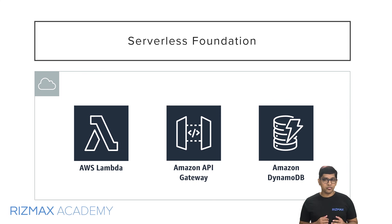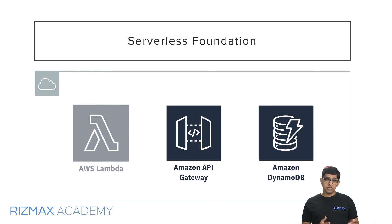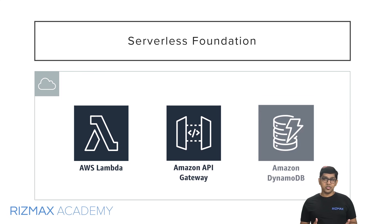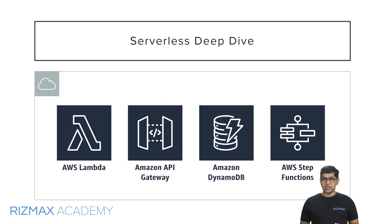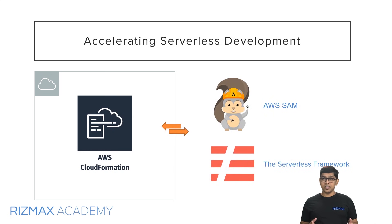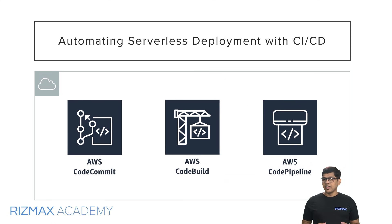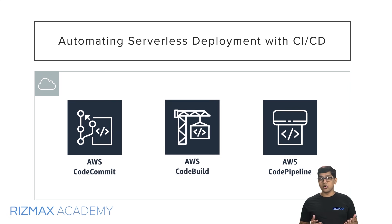We'll first cover the basics of AWS Serverless Architecture — covering AWS Lambda, API Gateway, and DynamoDB — and then dive deeper into advanced concepts. We'll also learn building serverless workflow patterns using Step Functions, and then the best approach to building serverless applications using frameworks like AWS SAM and the Serverless Framework. We'll take this further and show you how to automate and streamline your serverless delivery and deployment with CI/CD tools like AWS CodeCommit, CodeBuild, and CodePipeline.